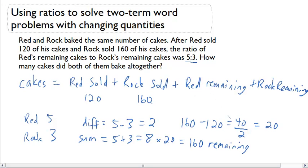Now we know that the total number of cakes is 120 from Red that he sold, 160 from Rock that he sold, and then whatever is remaining between Red and Rock. This doesn't break it out between Red and Rock, but it does give us the total remaining. So these quantities have to be a total of 160.